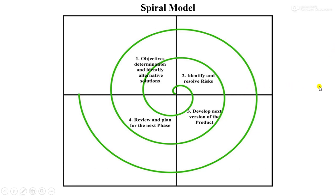The radius of the spiral represents the cost and effort currently required for the project, and the angular dimension represents the progress of each phase.